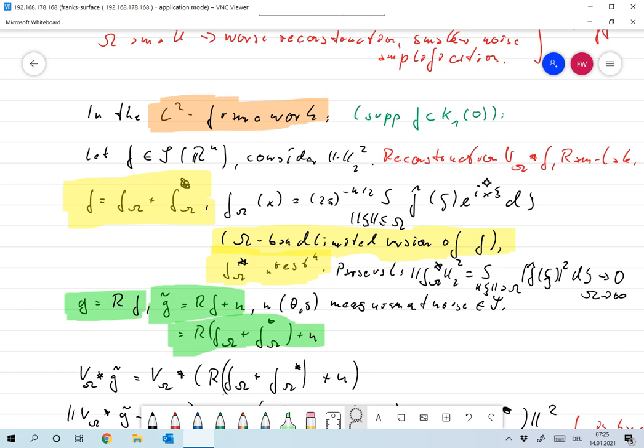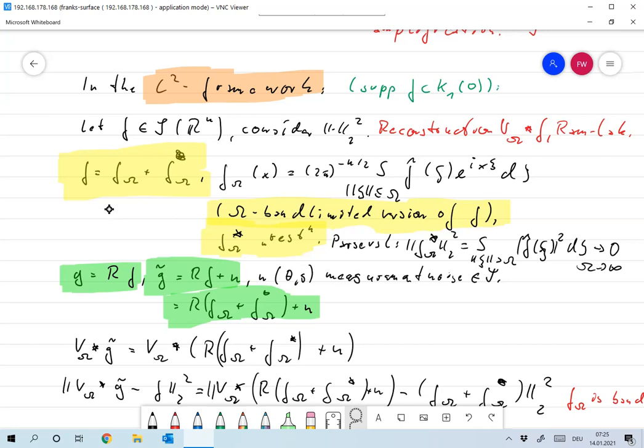Our regularization as before is the implementation of v_omega convolution with f, and v_omega is the Ramlak filter. We start by writing f as f_omega plus f_omega star.